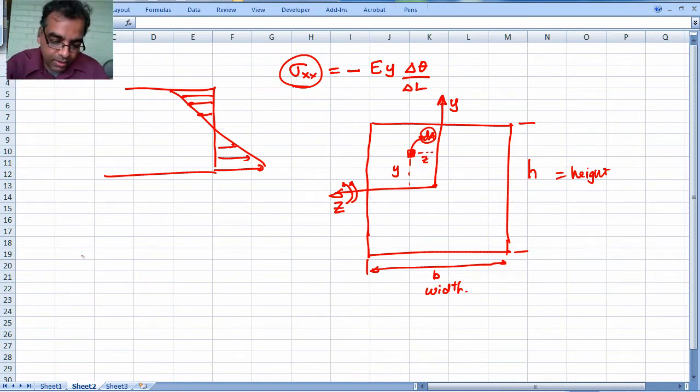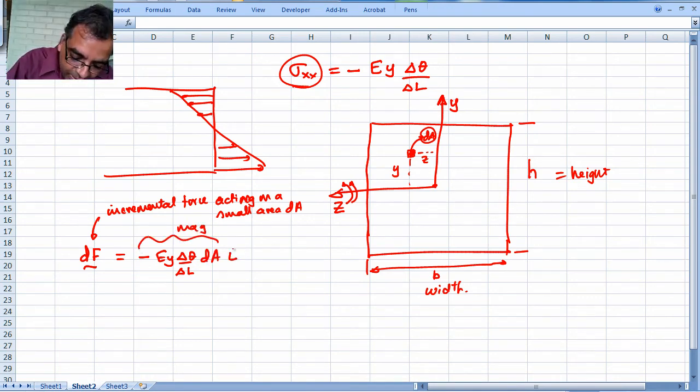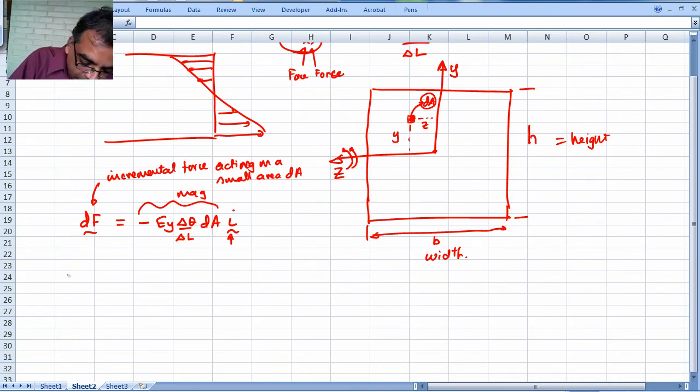We are now going to do it with vectors so that we can see all the calculations in great detail. So df, which is the incremental force vector acting on a small area da, has magnitude minus E y delta theta over delta l times da. What's the direction? This is in the i direction - it's coming out of the board. Because sigma xx, remember our notation, the second one is the x direction, the force is in the x direction.